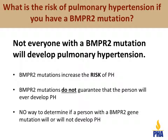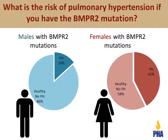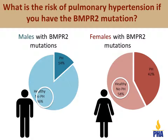Therefore, we know that there must be other factors besides your genes that matter. For instance, adults are more likely to develop pulmonary hypertension than children. Women with BMPR2 mutations are also more likely to develop pulmonary hypertension than men. About 42% of women with a BMPR2 mutation will develop pulmonary hypertension at some point in their lifetime, compared to only 14% of men. This also means that 58% of women and 86% of men with a BMPR2 mutation will never develop pulmonary hypertension.